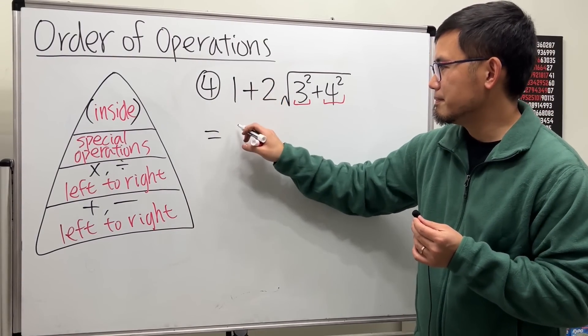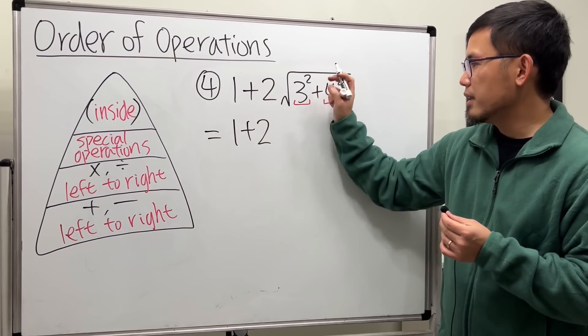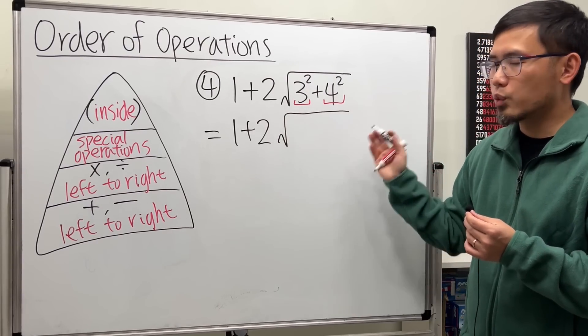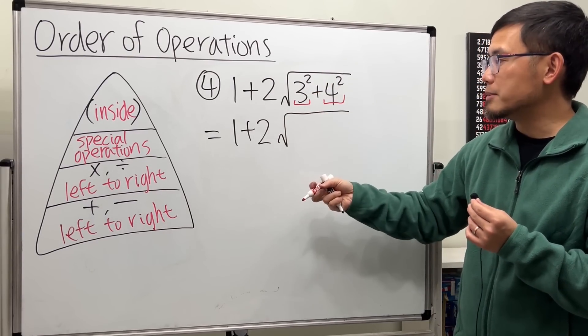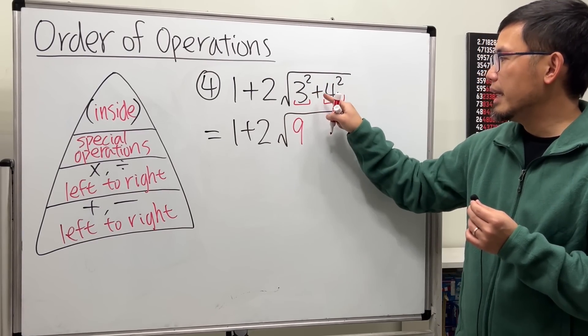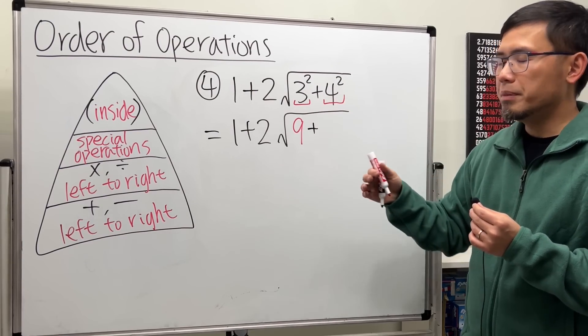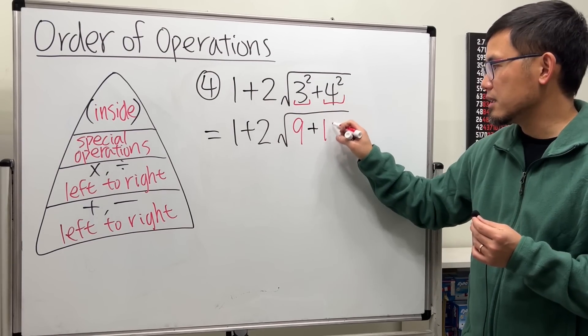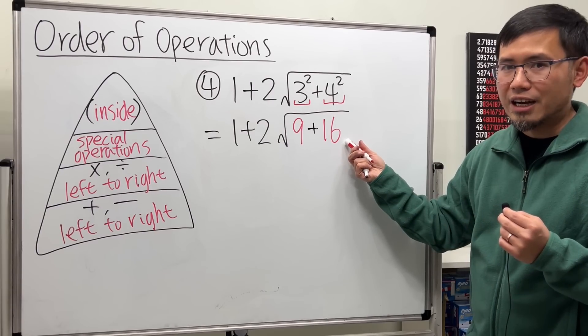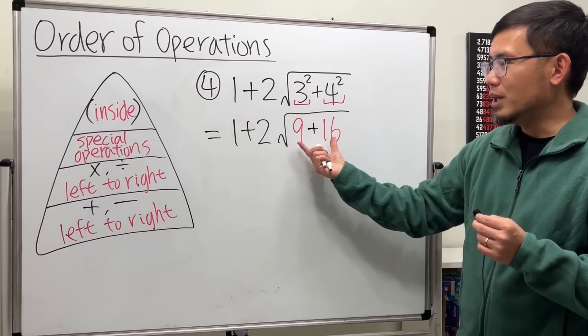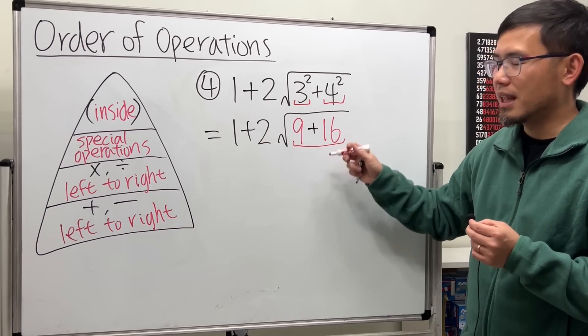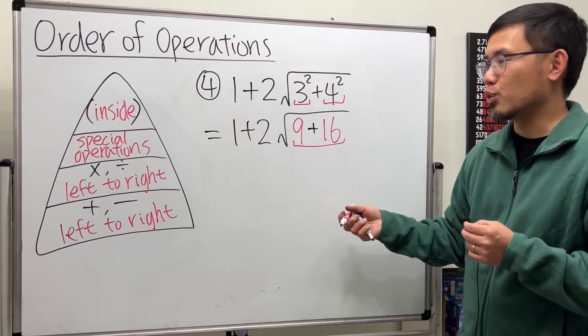Now this is what we have. Next, we still have to work out inside, which is 9 plus 16, and that will give us 25. So this stays, and then we have the square root, and then we have 25 here. And what do we do next? Well, we work out the special operation now, which is the square root of 25, which will give us a 5.